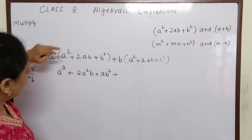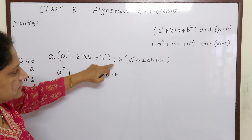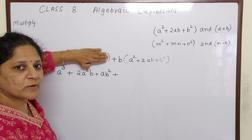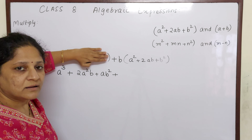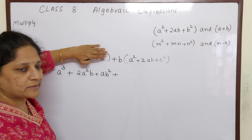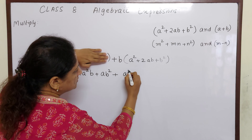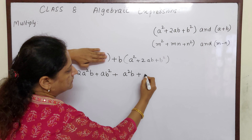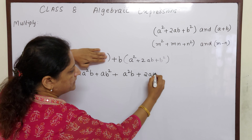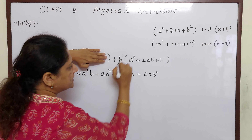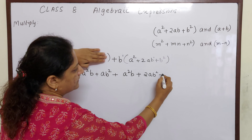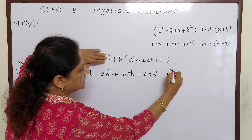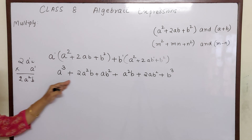We finished multiplying a with each term. Now we multiply b. b into a² = ba², which can also be written as a²b. Plus 2ab into b: no power means 1, b × b = b², so 2ab². Plus b¹ into b² = b³. So this is your answer before combining like terms.